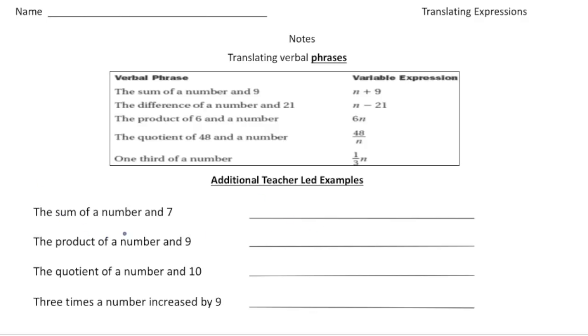So the first one says the sum of a number and seven. So sum is associated with the operation addition. So this one is it's going to be n plus seven. Now we can use any variable you want but for these I'm going to use the letter n.